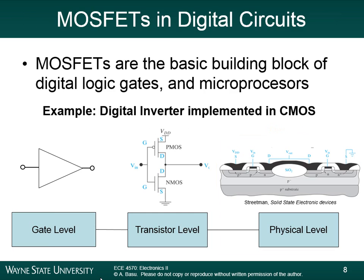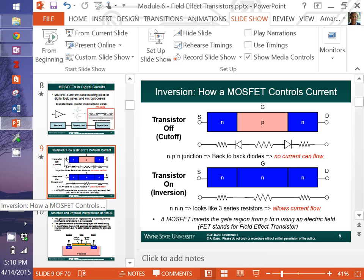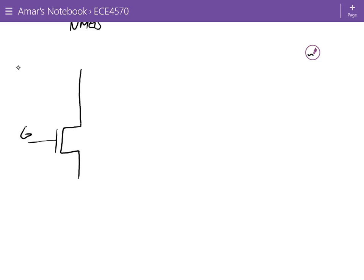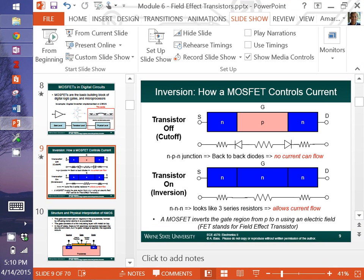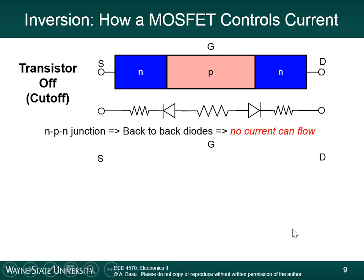I want you to understand how a MOSFET controls current from a very conceptual standpoint — where the idea of a MOSFET may come from. There's the gate, the source, and the drain. We want to be able to control whether there's a connection between the source and the drain by controlling a voltage at the gate. The gate will control whether there's an electrical connection between the source and the drain. Let's look at how we can do that using semiconductors.